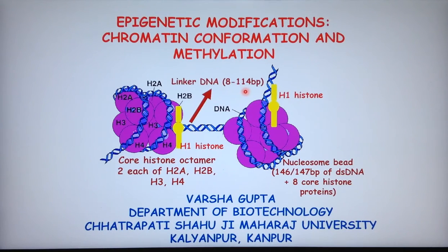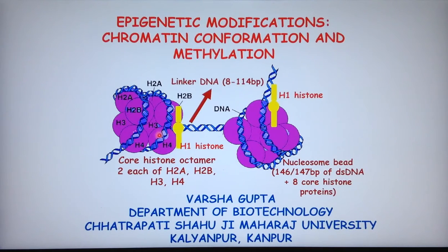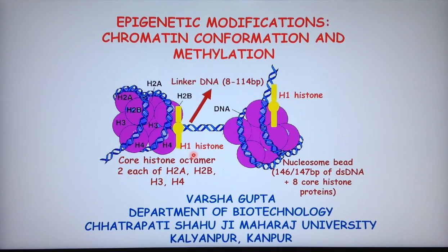The linker DNA is 8 to 114 base pairs, and its length varies depending on the tissue from which the chromatin is extracted. At the next level of compaction, a single molecule of histone H1 is attached to the nucleosome at the position of the linkers. This brings together successive nucleosome cores and twists them into a 30 nanometer fiber, producing another 6-fold DNA compaction.